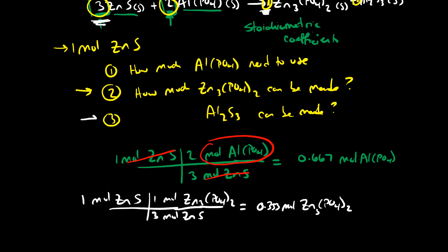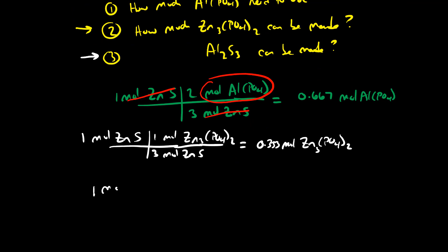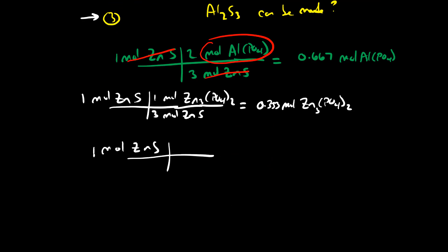We would do exactly the same thing for aluminum sulfide. We have one mole of zinc sulfide and we want to figure out how much aluminum sulfide we can make. From our balanced reaction, for every three moles of zinc sulfide we can make one mole of aluminum sulfide. Following the units, moles of zinc sulfide cancel and we're left with 0.333 moles of aluminum sulfide.